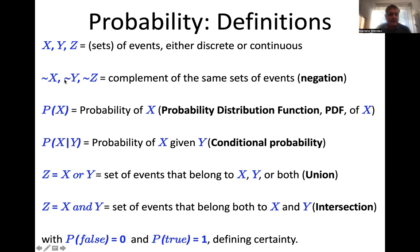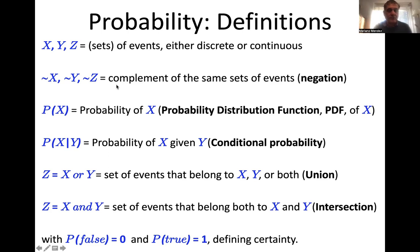The negation is not X, not Y, not Z. For instance, if a die shows one, then X is one, and not X is two, three, four, five, six. Then we define the probability of X: what is the probability of getting a one when you throw a die? Or what is the probability of having so many photons in a given energy channel, or the photons in each channel of the whole spectrum? This is called the probability distribution function, or PDF, of X.